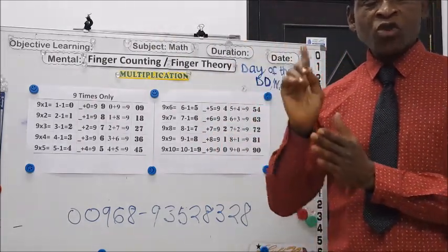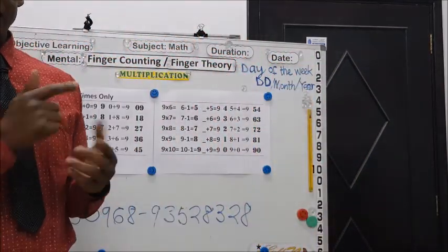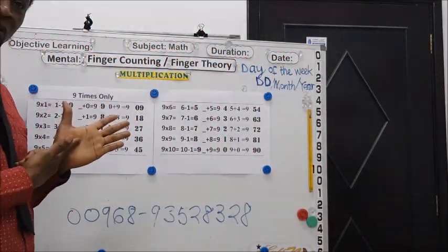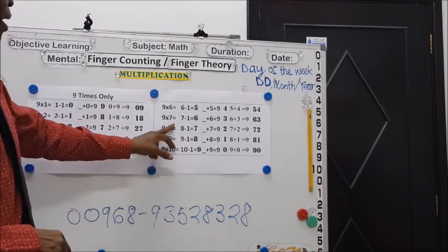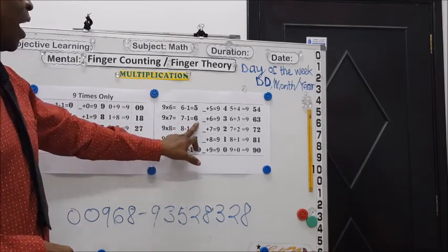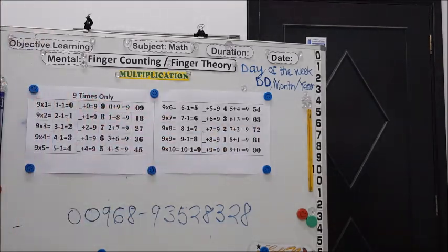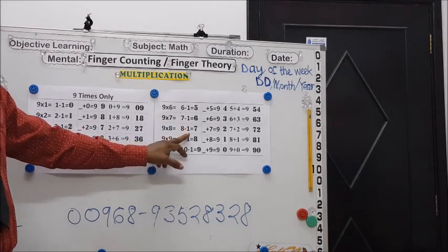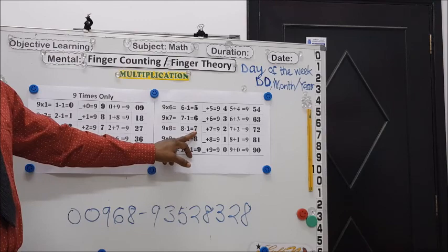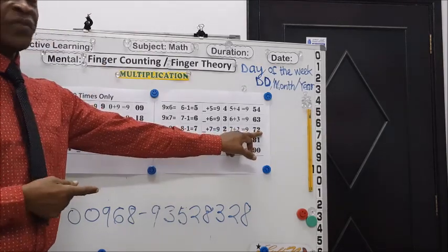7: subtract 1, that is 6. What number should I add to the 6 and then I'll get 9? That is 3. So 63. 9 times 8: subtract 1 from the 8, or move back a step. That is 7. What number should I add to 7 and I'll get 9? 2. So 72.